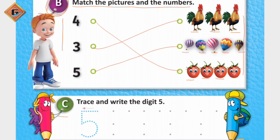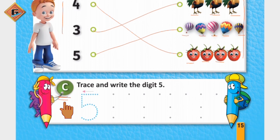Now move to the next part, which is number C. What we have to do in it? Trace and write the digit five. What do we have to do? First of all, trace it, and after that we have to write it.